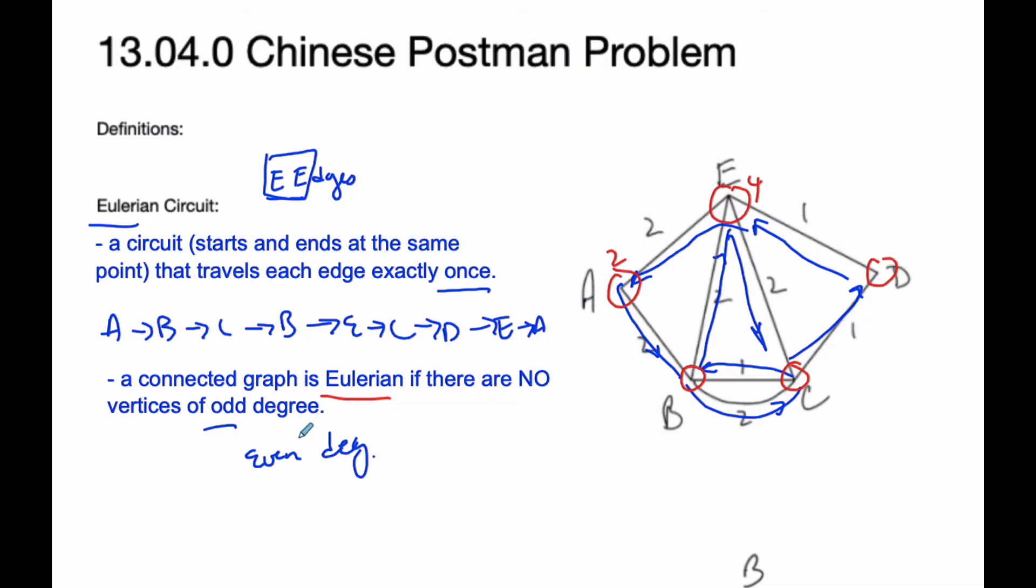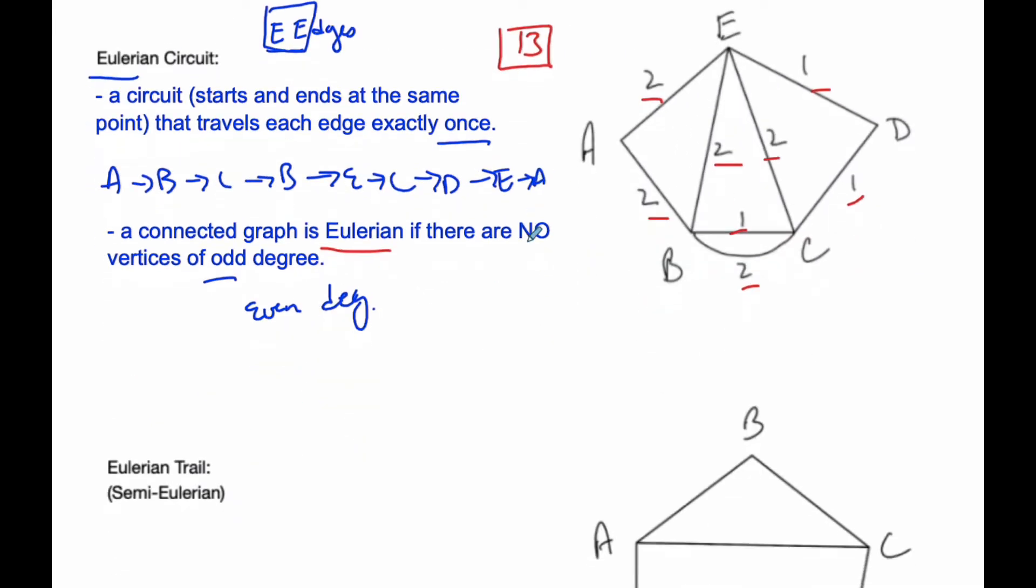And the weight of this, or the length of this postman's trail that he would have to travel, is in essence you just take a look at all the values of the weighted scenario. I got all these 2s, so there's 10 plus 3. And so the weight of this circuit would be 13 is the minimum distance.